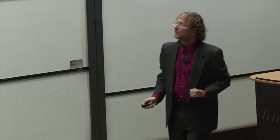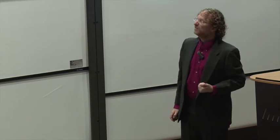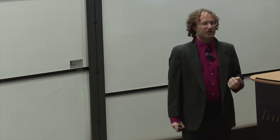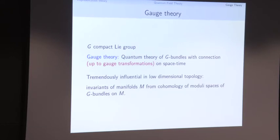So what is gauge theory? We start with a compact Lie group G and study a quantum theory of G-bundles with connections, quotiented by gauge transformations on a manifold — our spacetime. This is a well-known theme in Oxford and in math broadly, particularly low-dimensional topology: given a manifold M, we get interesting topological invariants by counting, in some sense, solutions or measuring spaces of G-bundles with connections on that manifold.